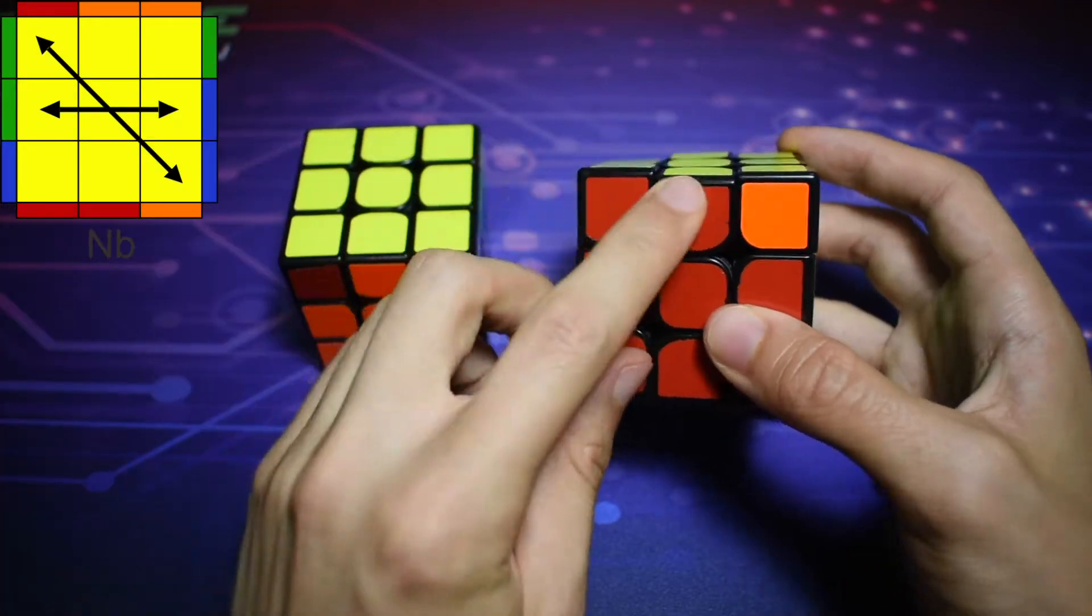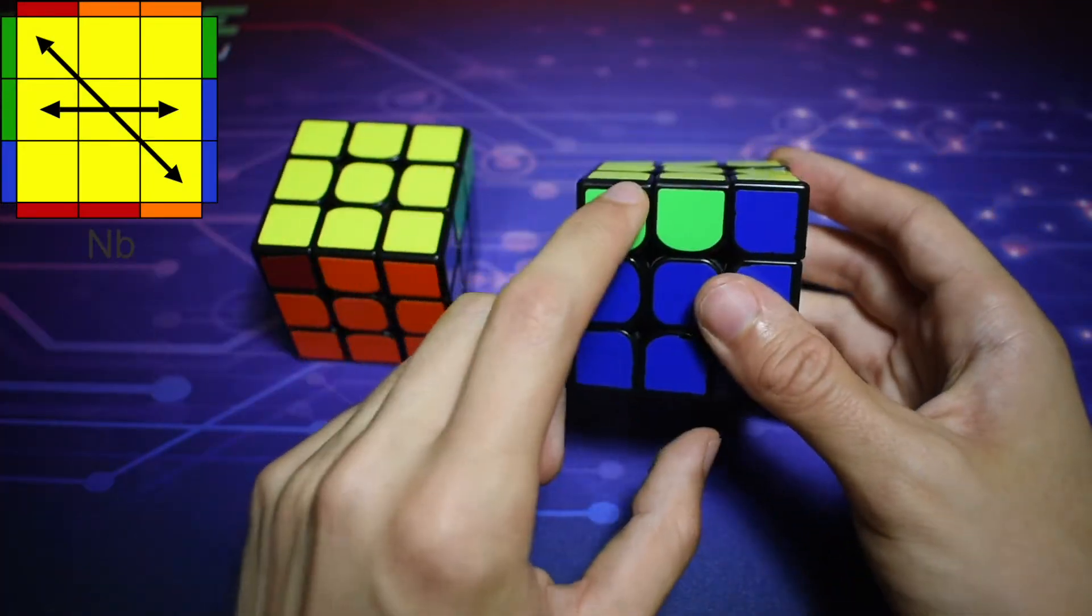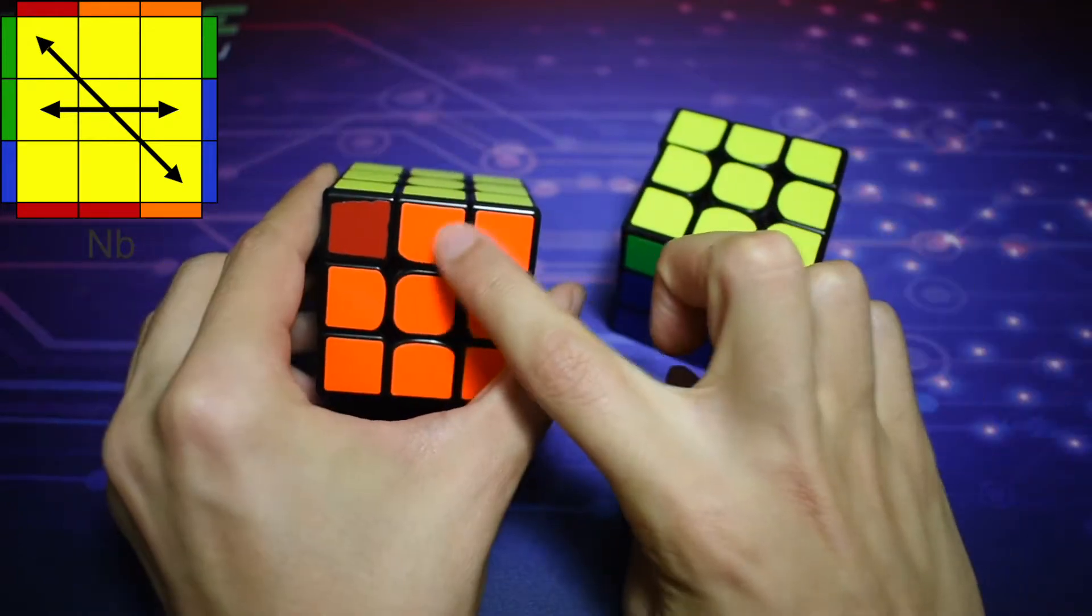For the other N-perm, it is the exact same, but the 2x1 bars will be on the left rather than the right.